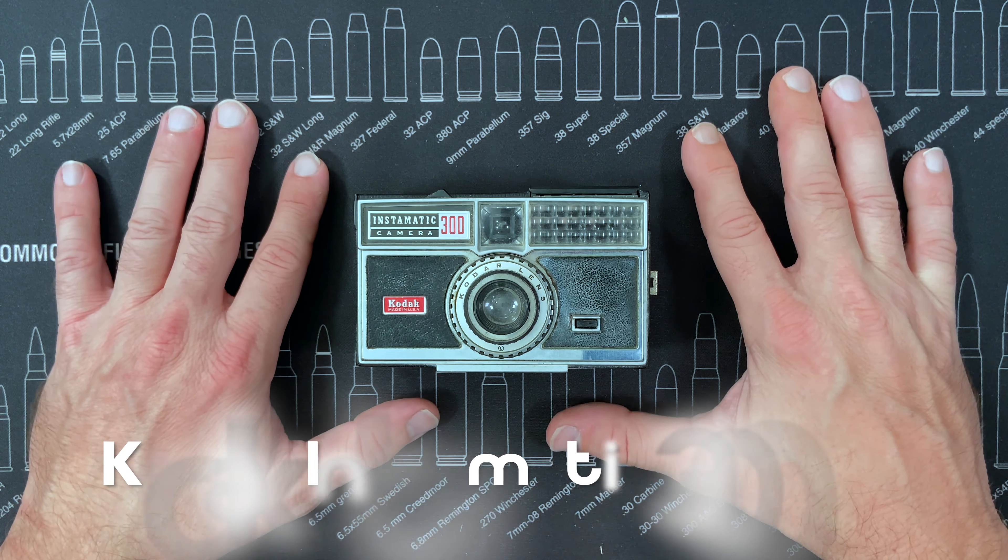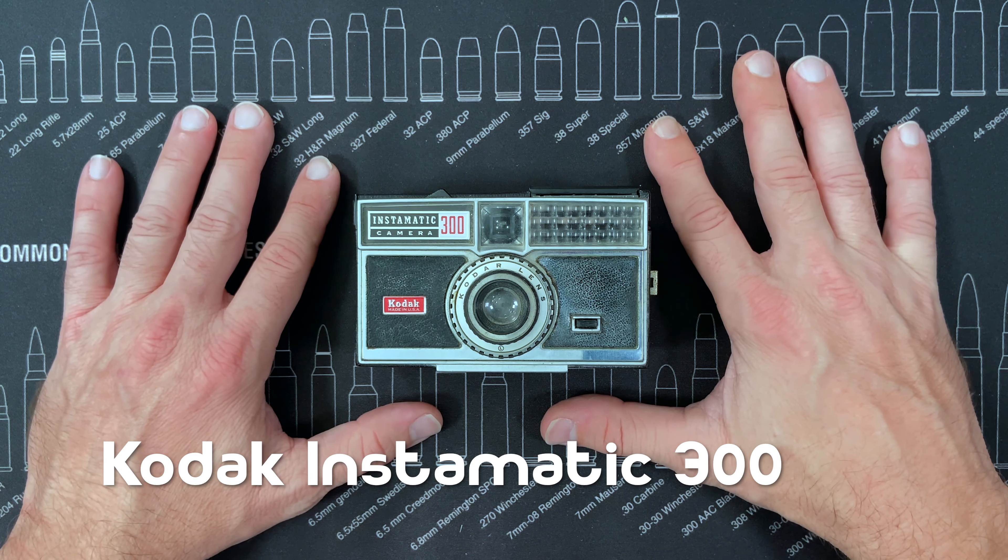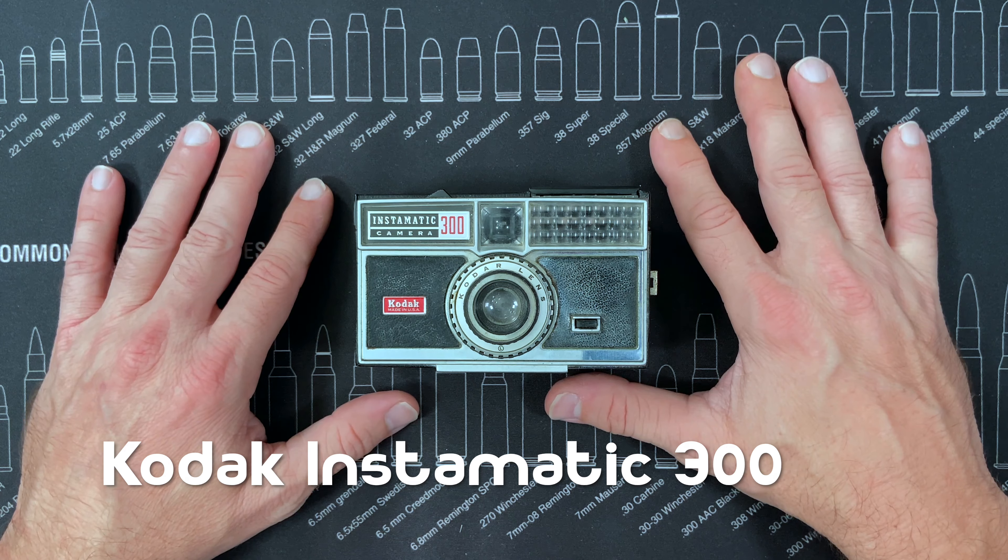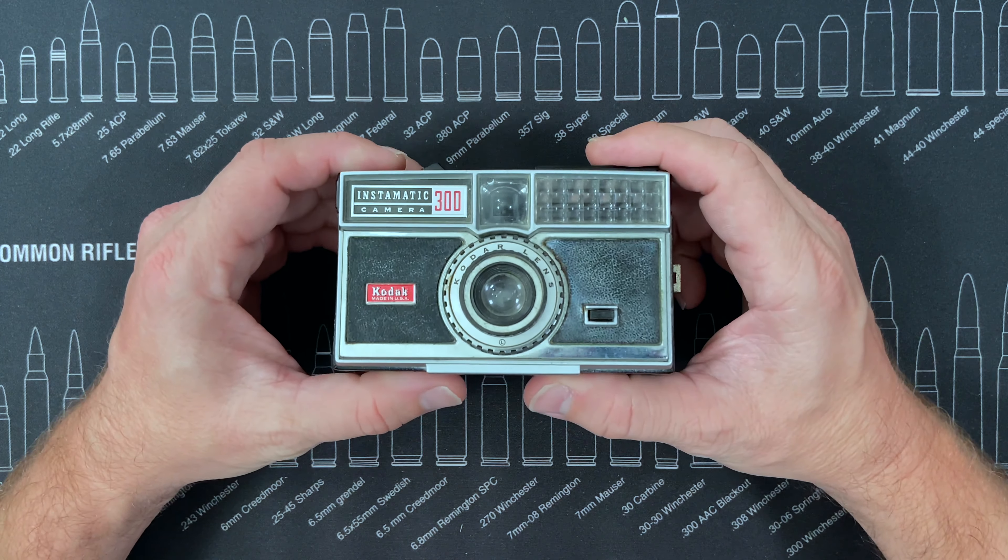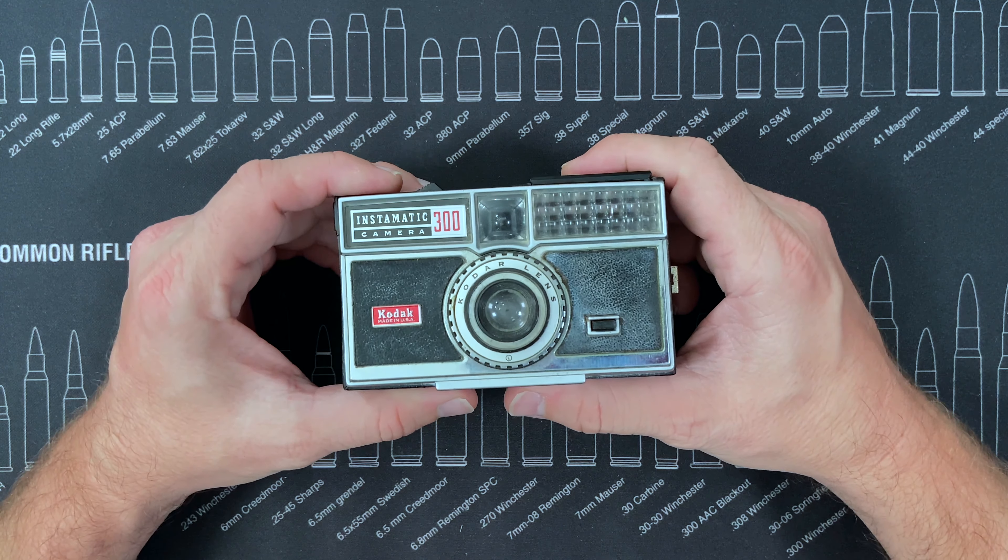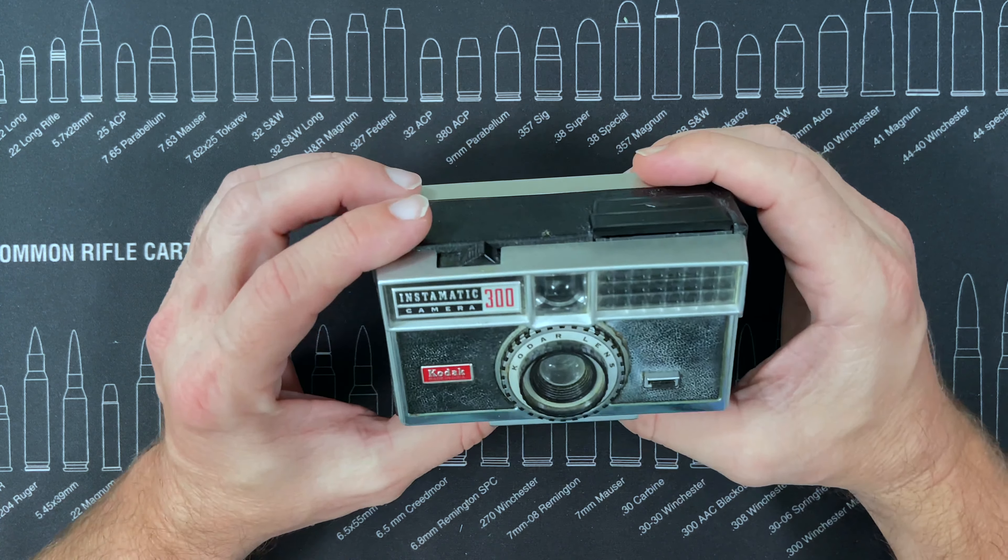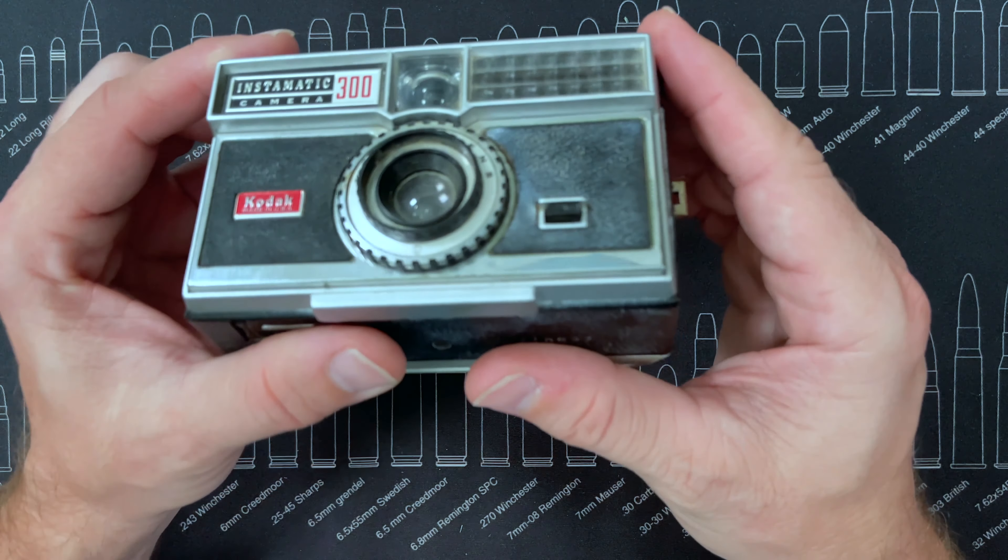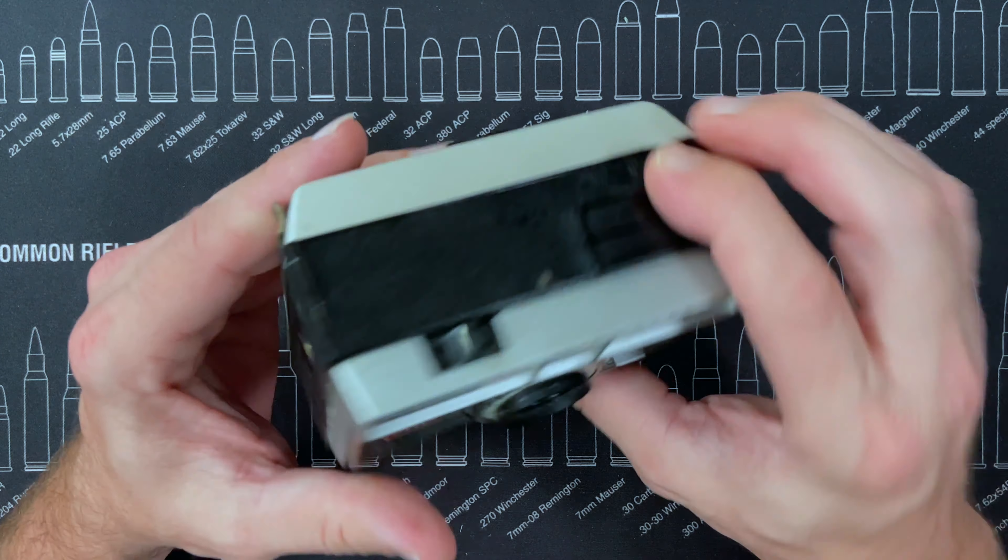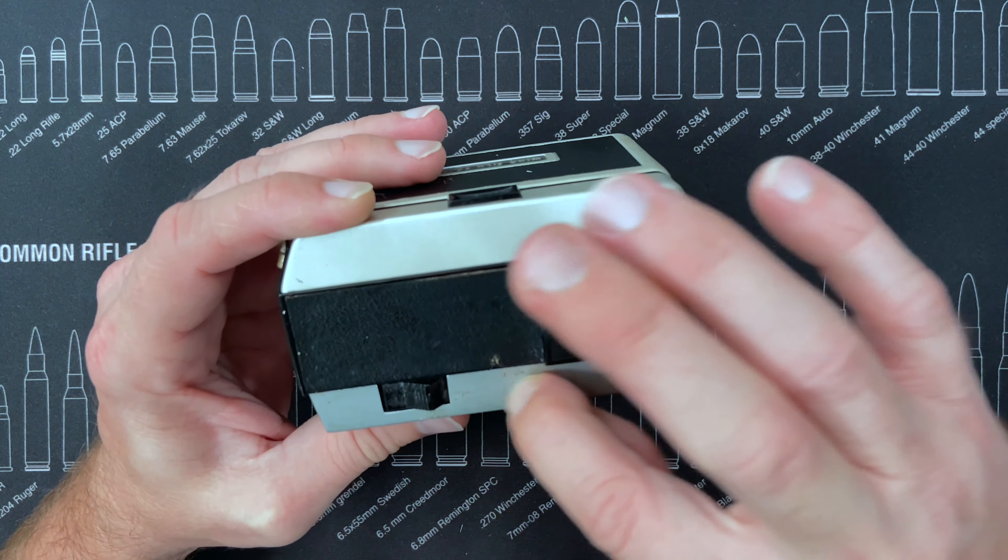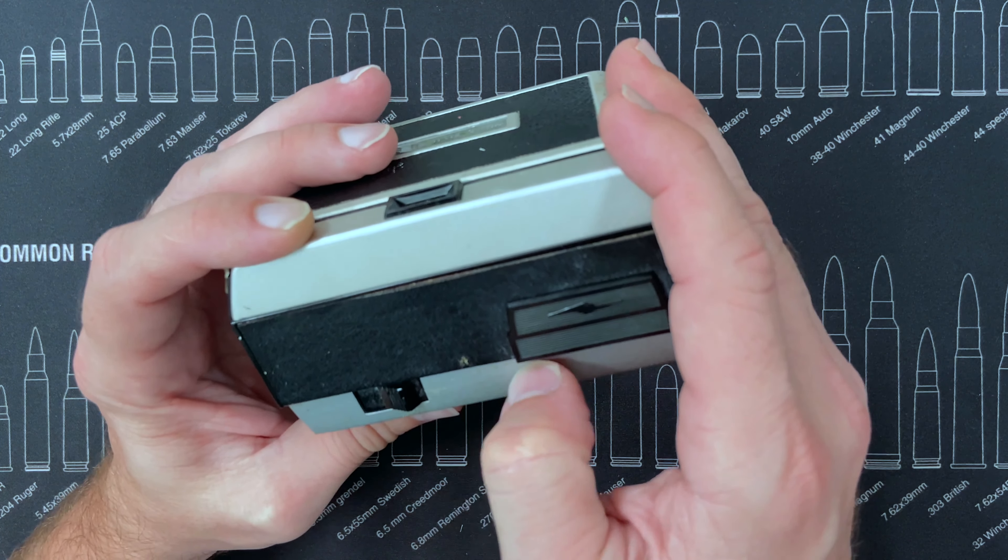Hey guys, today we're going to be looking at the Kodak Instamatic 300 camera. This camera was released in March of 1963 and discontinued in June of 1966. You can see this one is a little bit dingy, so we're going to see what we can do to clean this guy up.